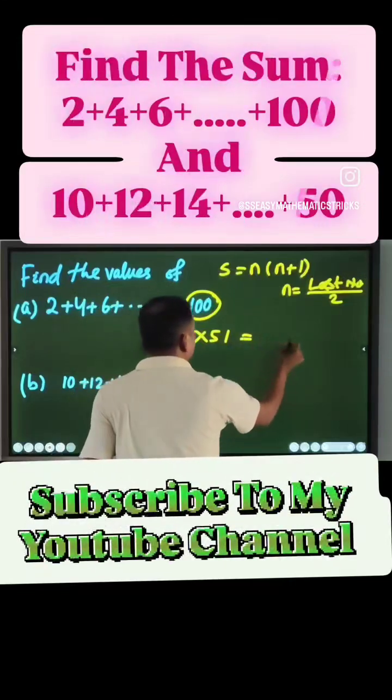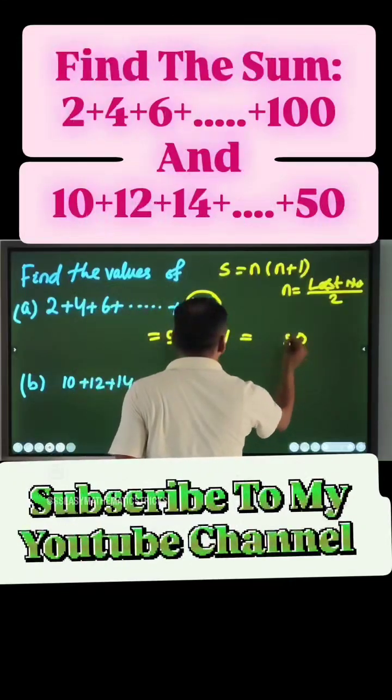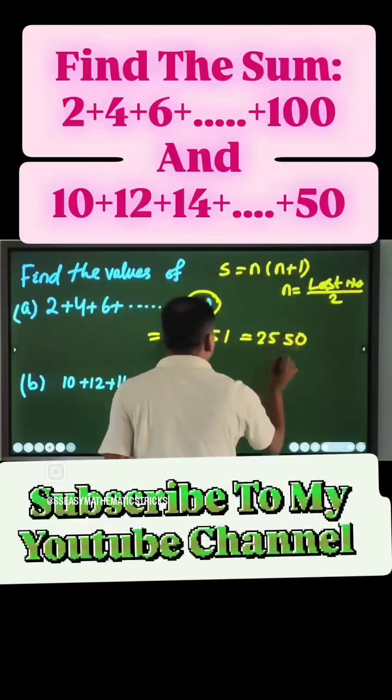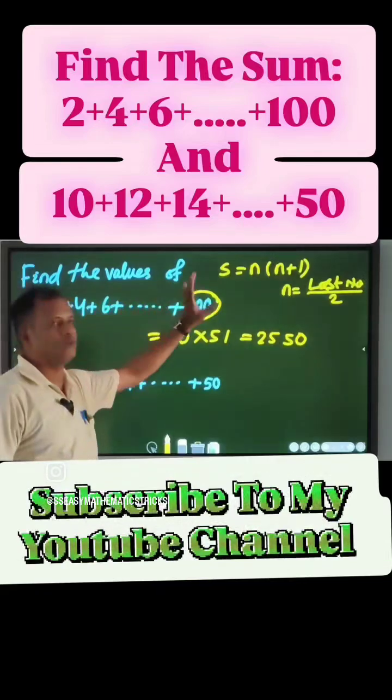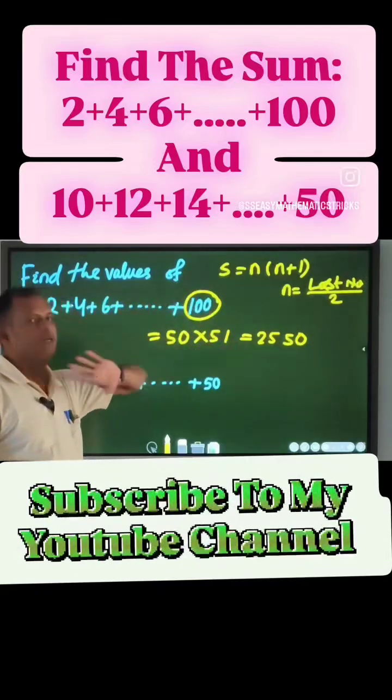Now solve 50 times 51. So answer is 2550. Sum of all even numbers up to 100 is 2550.